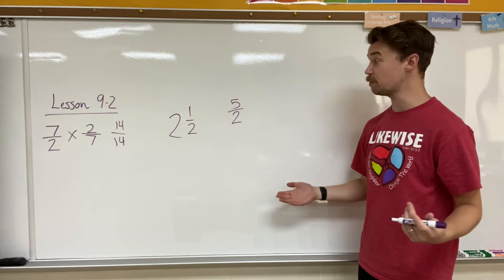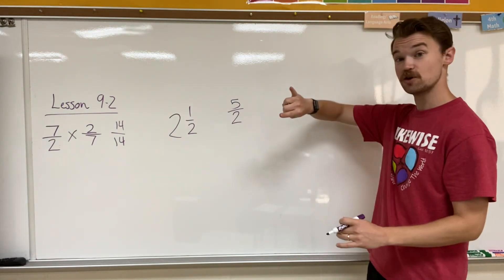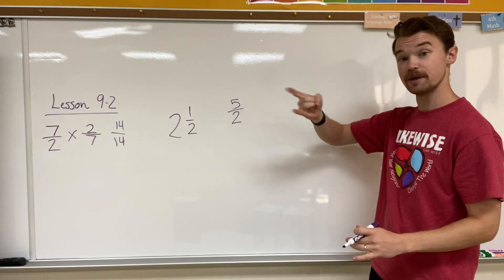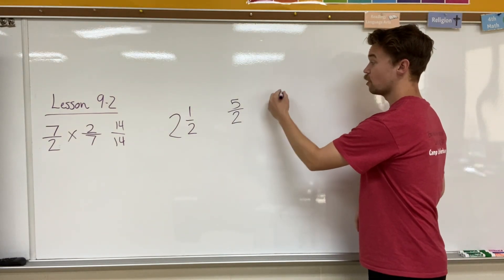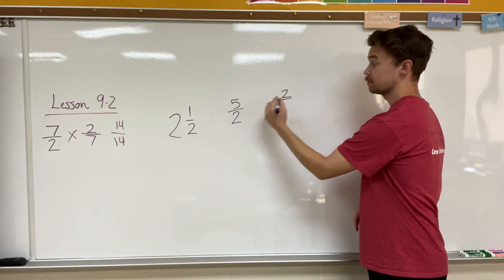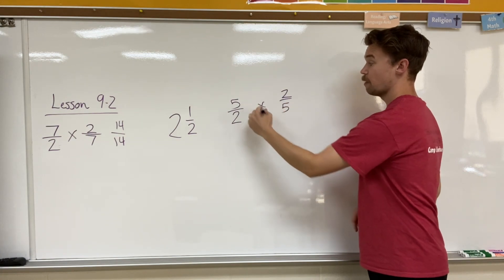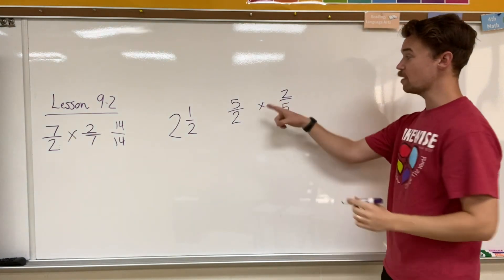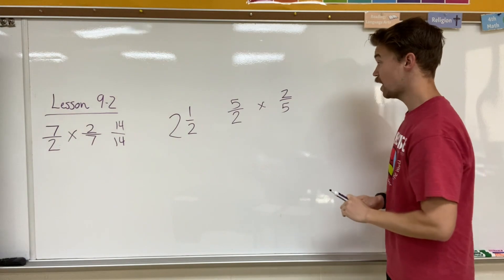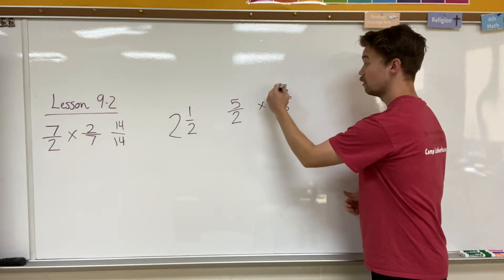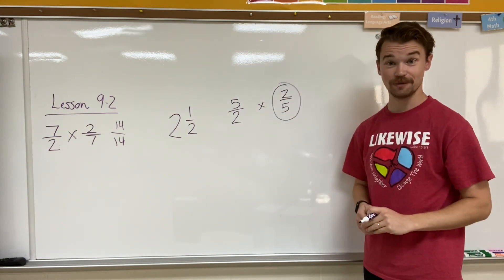Now, what would be the reciprocal of 5 over 2? Well, I would flip the numerator and the denominator to different positions. The 2 would go on the top now, and the 5 would go to the bottom. If I multiply those two together, I would get the answer of 1. So my answer would be 2 over 5 is the reciprocal.